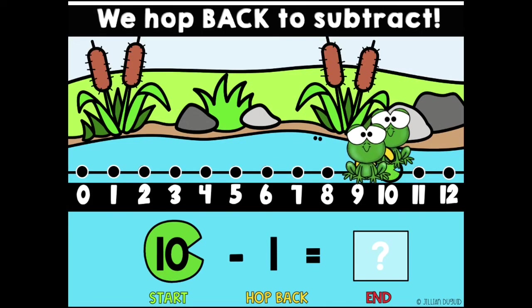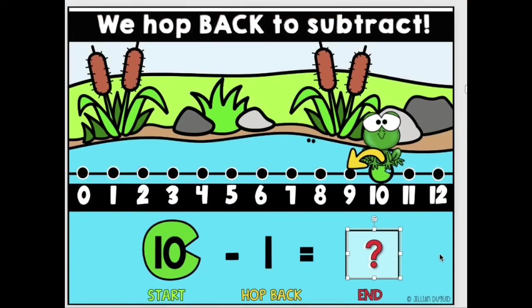We hop back to subtract. So when he hops back 1, what number does he land on? 9. 10 minus 1 is 9. Good job. Let's try another one.